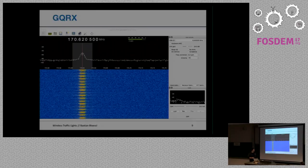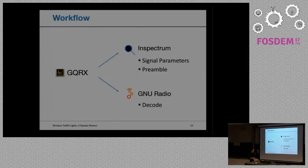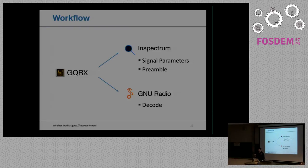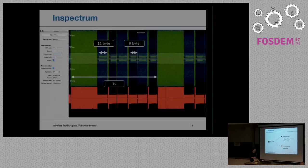My normal workflow when doing these things: there's really great tooling now. We have GQRX where I could easily see and filter the signal. Then I just did some recording to a WAV file and loaded the WAV file in Spectrum. Spectrum is really nice if you just want to get the signal parameters — see how it is modulated, bits per second, and stuff like that. After knowing the signal parameters, I do some simple decoding in GNU Radio.